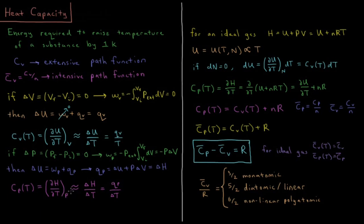Over a small temperature range, Cp is approximately delta H over delta T — the change in enthalpy over the change in temperature — which is approximately the constant pressure heat divided by delta T.